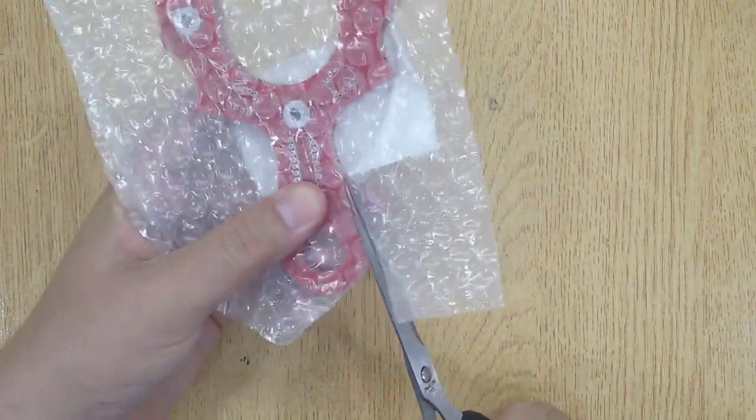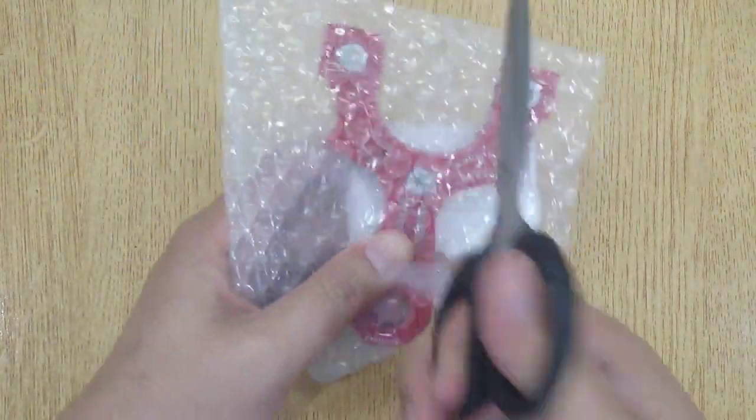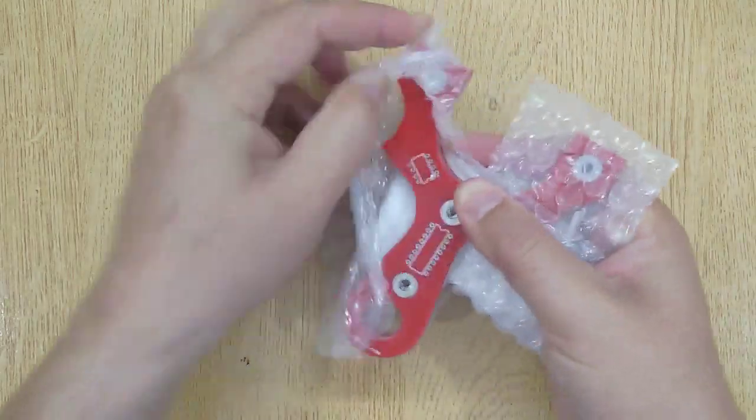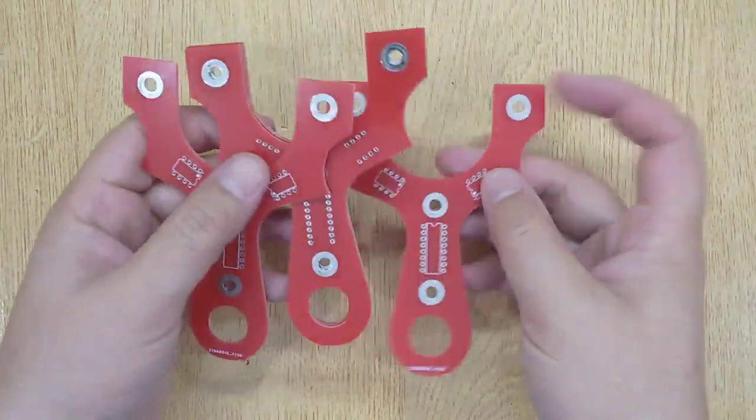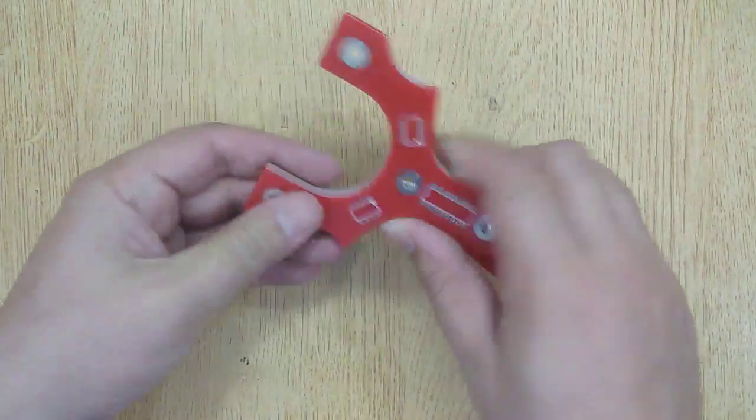I have created this slingshot design using EasyEDA and then ordered it from JLCPCB for printing. If you are also interested, I will show you the complete ordering procedure at the end of this video.